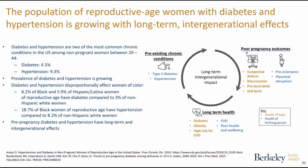The population of reproductive age women with diabetes and hypertension is growing, and this has long-term and intergenerational effects. Diabetes and hypertension are two of the most common chronic conditions in the United States among nonpregnant women between the ages of 20 and 44. The most recent data, from a 2019 study, shows diabetes at about 5% and hypertension at about 9% prevalence in this population, and this has been trending up over time. A study just published in JAMA this week also looked at cardiovascular disease risk factors in this young adult age range and found increases.